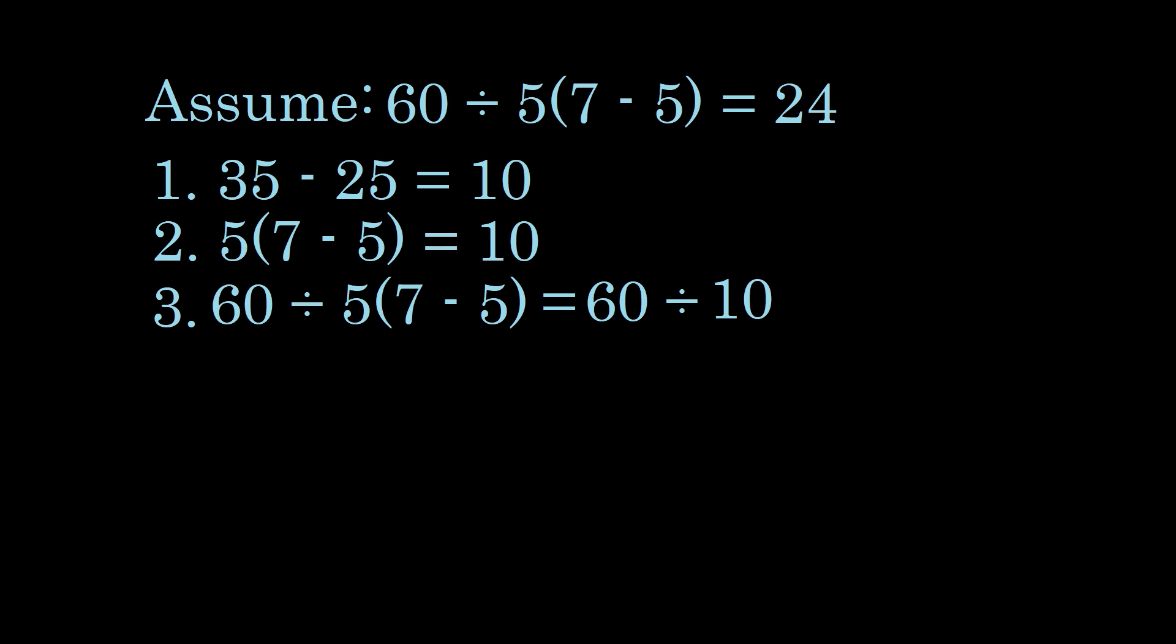Now we have assumed that 60 divided by 5 parentheses 7 minus 5 end parentheses equals 24, so we can substitute 24 in, and we have 24 equals 60 divided by 10. But 60 divided by 10 equals 6. Therefore, 24 equals 6. This is clearly false, and therefore our original assumption must also be false.